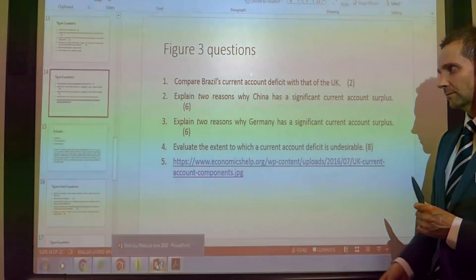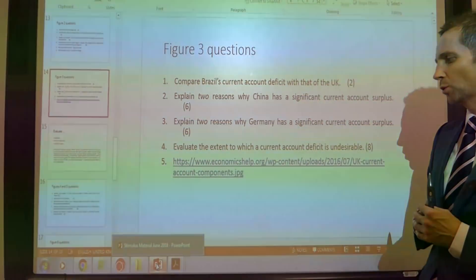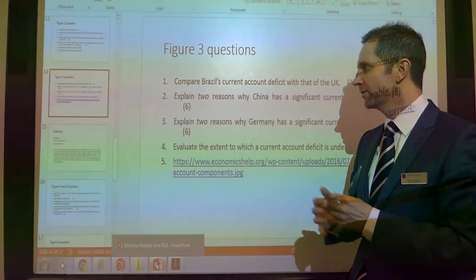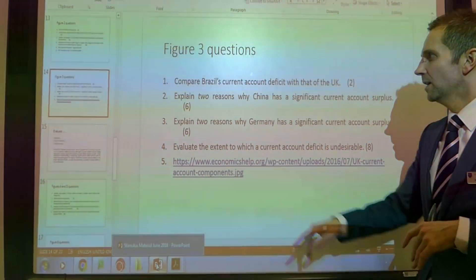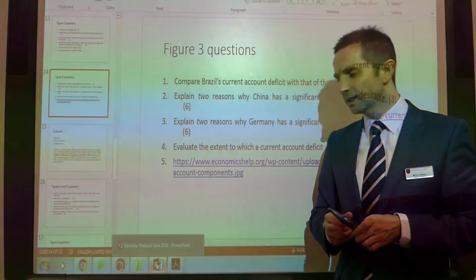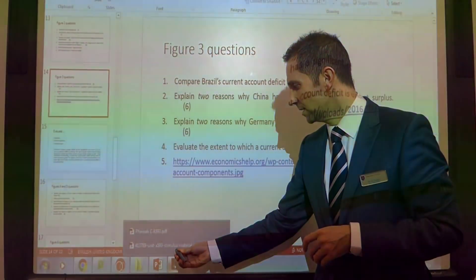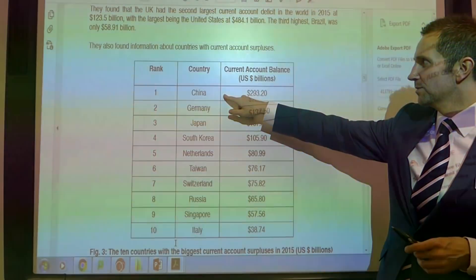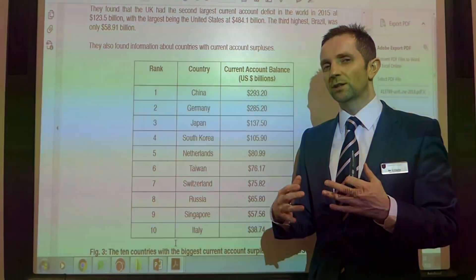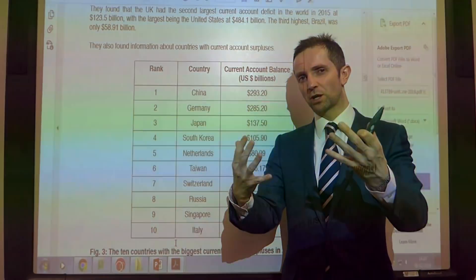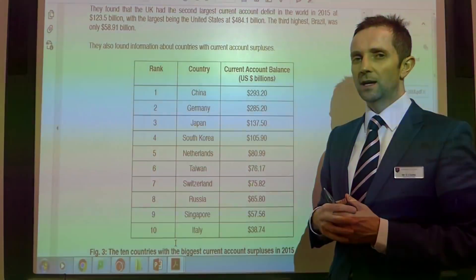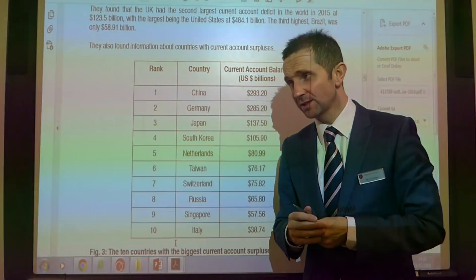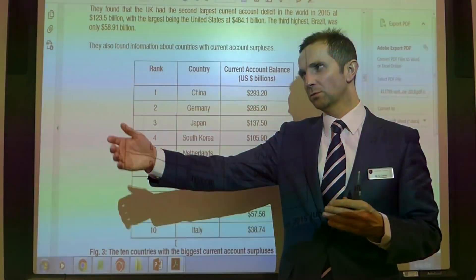Second question, for six marks - a potential question that appears quite often as a 'state and explain' question: explain two reasons why China has a significant current account surplus. That is obviously related to China's ranking of one in terms of the value of its current account surplus. You might be asked to give a couple of reasons and arguments as to why that is the case.